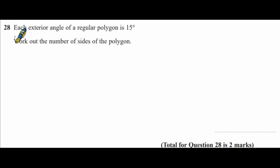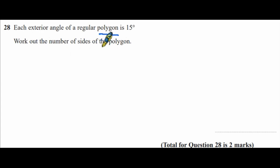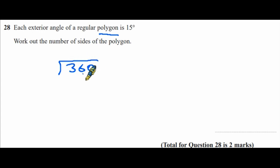Question 28: each exterior angle of a regular polygon is 15 degrees. The exterior angles of any polygon add up to 360 degrees. So 360 divided by 15 equals 24 — the polygon has 24 sides.